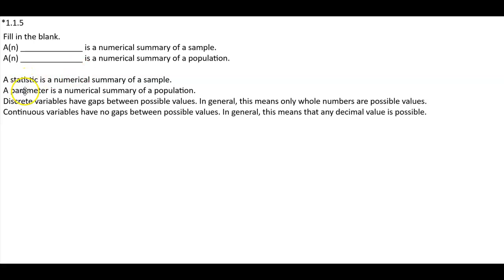Let's take a look at the definitions. A statistic is a numerical summary of a sample. A parameter is a numerical summary of a population.